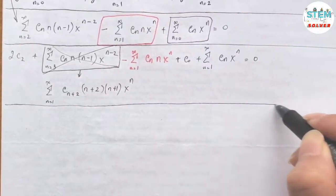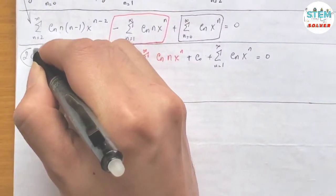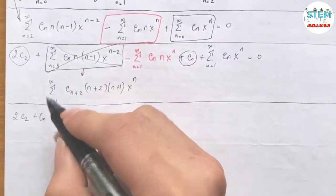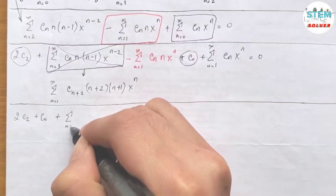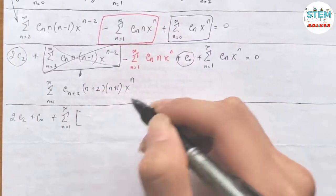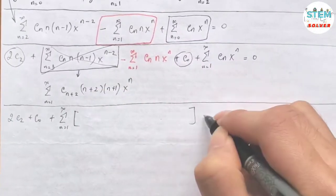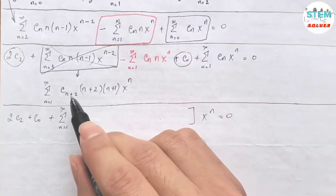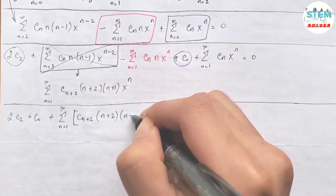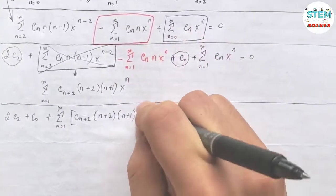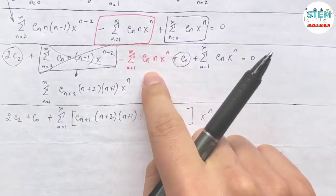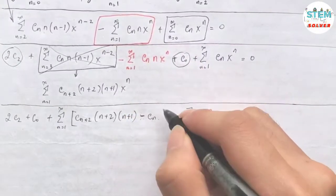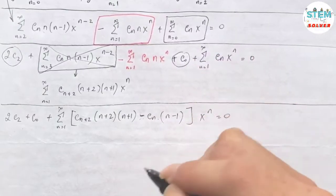Now we are going to combine like terms. So I have 2c2 plus c0 plus power series from 1 to infinity x to the n equals 0. So you have cn plus 2 times n plus 2 times n plus 1. And for this one, you have cn in common, so factor it out. And I'm going to factor out the negative sign as well. And in parentheses, I have n minus 1.